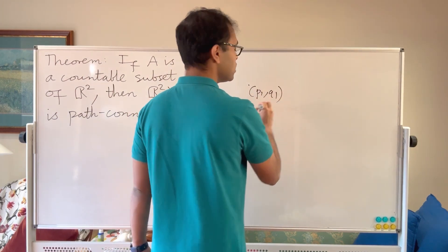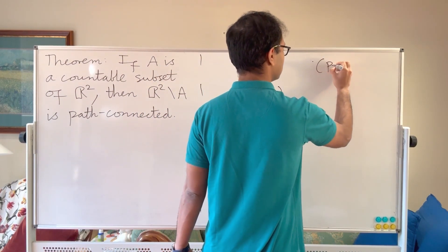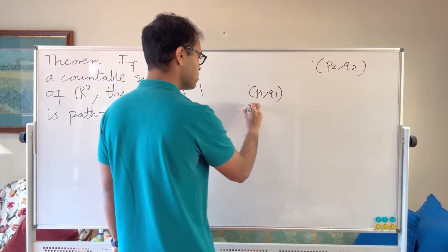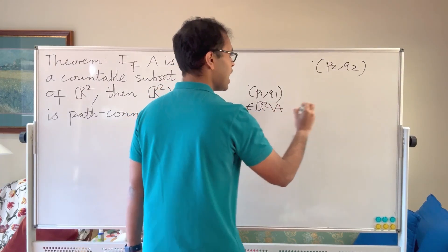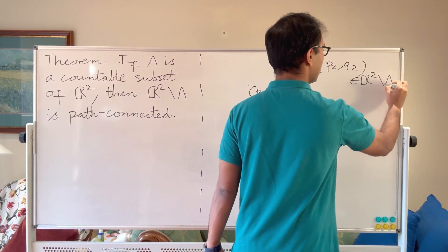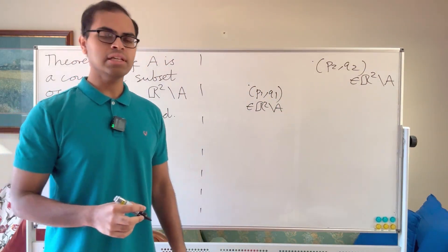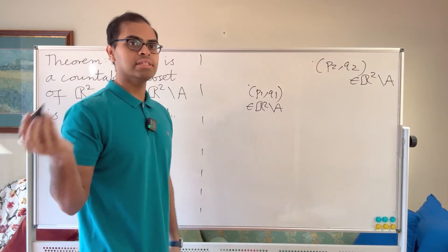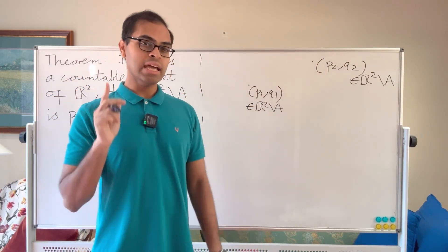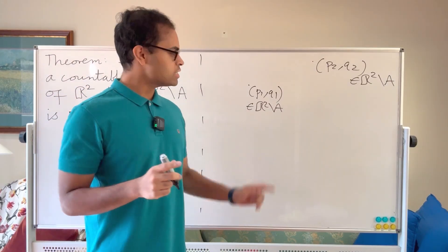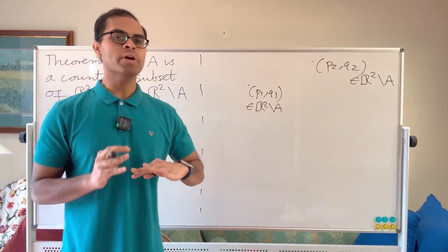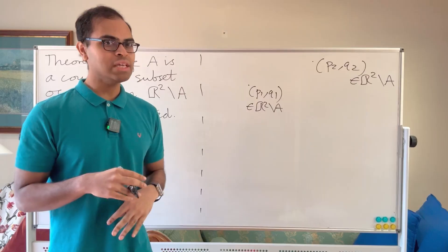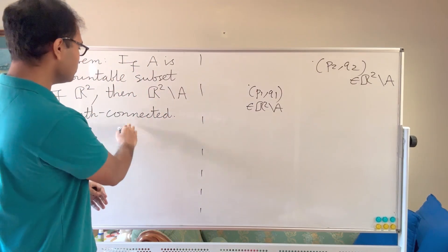We're going to start off with two points in the plane: (p1, q1) and (p2, q2), both inside ℝ² minus A — so they're not in the countable set A that we're deleting. We're not using the countability yet; we're just saying they're not in A, and we want to connect them by a path that avoids A. The proof can't be super constructive because we don't know where A is going to obstruct us, so we have to show the existence of a path.